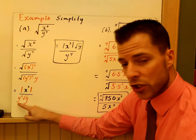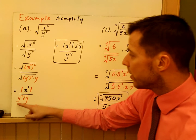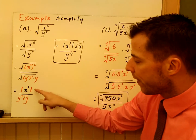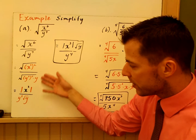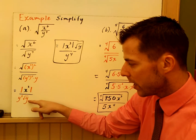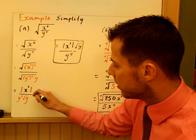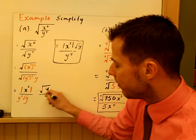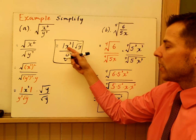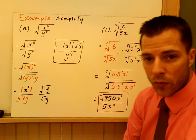For y cubed in the denominator, you have the same situation — should you put absolute value? In this case, no, because when you rationalize the denominator, you get an even power there. So the simplified form is the absolute value of x cubed over y cubed times the square root of y. Get rid of the root by multiplying top and bottom by root y, and you get the absolute value of x cubed times root y over y to the fourth.